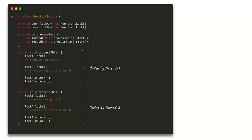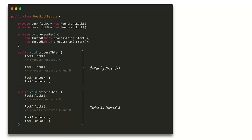Similarly, in 'processThat', we acquire Lock B first instead of Lock A, and then acquire Lock A when we want to work with both resources. We have two threads: Thread 1 calls 'processThis' and Thread 2 calls 'processThat'. This simple code results in the same deadlock scenario we saw earlier.